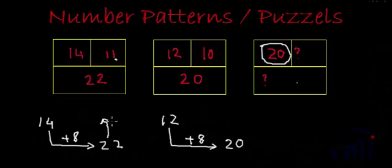So we have to divide by 2 this 22 and we are getting 11. Similarly, if we divide this 20 also by 2, we will get 10.